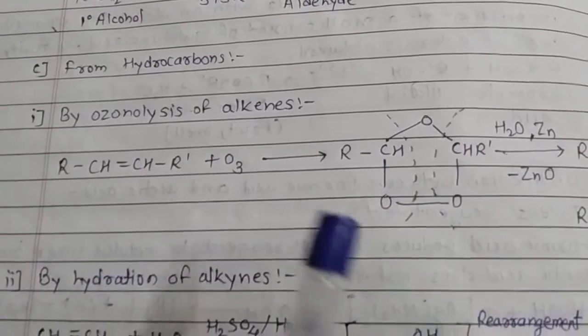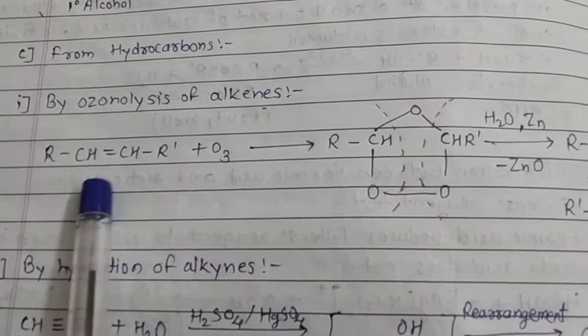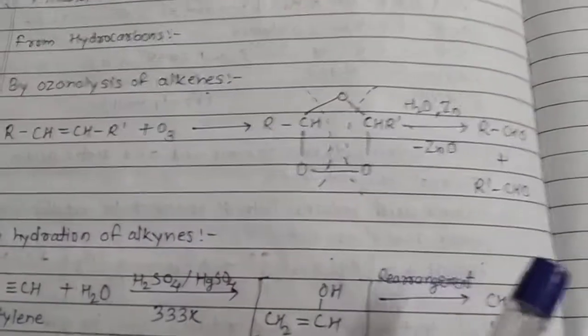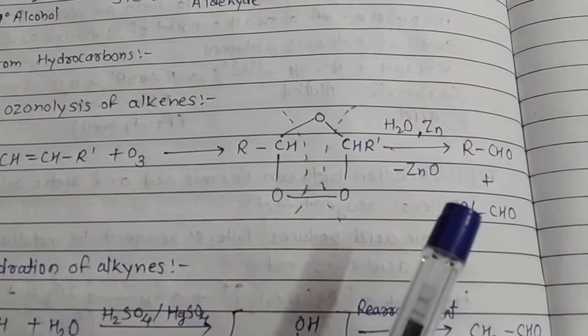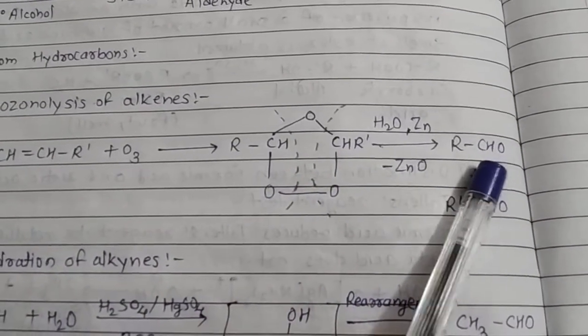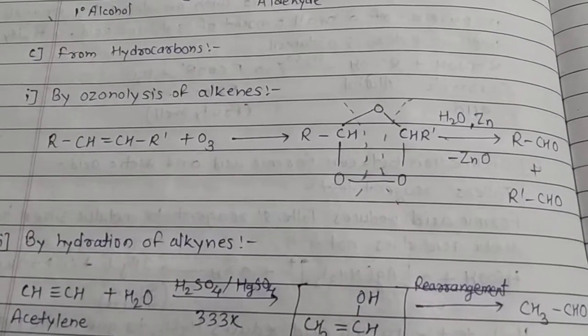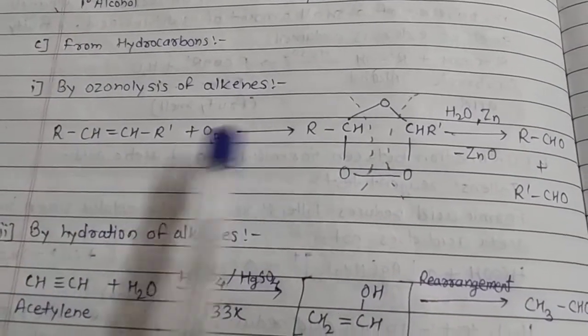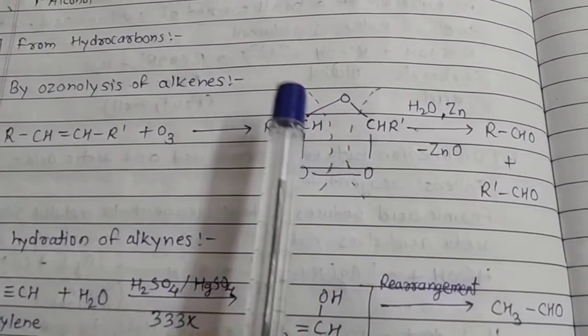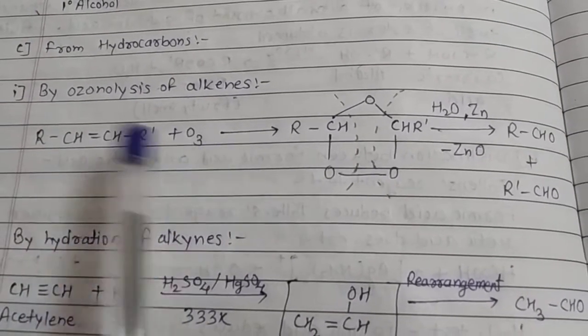First is by ozonolysis of alkenes. Ozone is added to an alkene and we get this structure. When it is treated with water and zinc, it gets broken down. RCHO will be one product and R'CHO another. This oxygen goes with zinc to give zinc oxide. Just write down this structure with three oxygens, one above and two below, and then cut them to get two aldehydes. They can be the same or different depending upon the R groups.